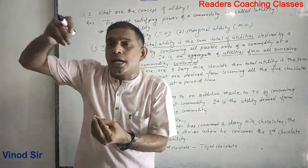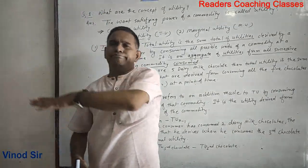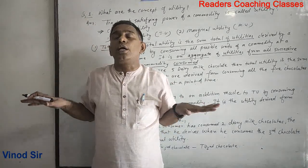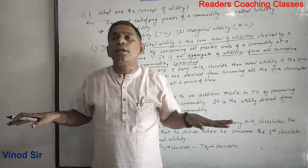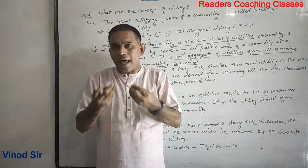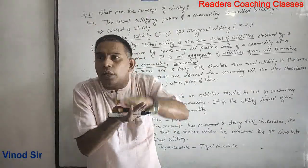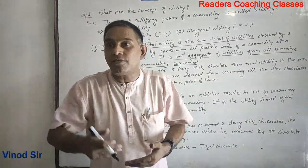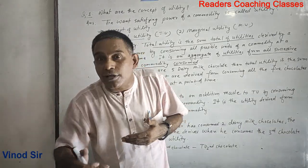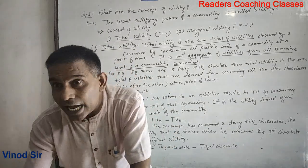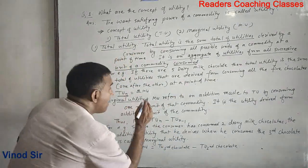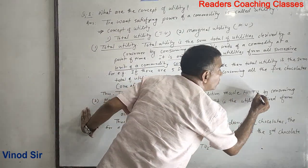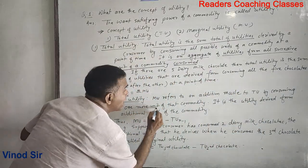Marginal utility refers to an addition made to total utility by consuming one more unit of that commodity. It is the utility derived from the additional unit of the commodity.